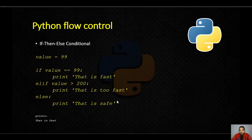So the structure is: an if part, then an elif part, then another elif part if needed, then an else part. The elif part is optional — if you want to include it you can, or you can leave it out and just use the else part.